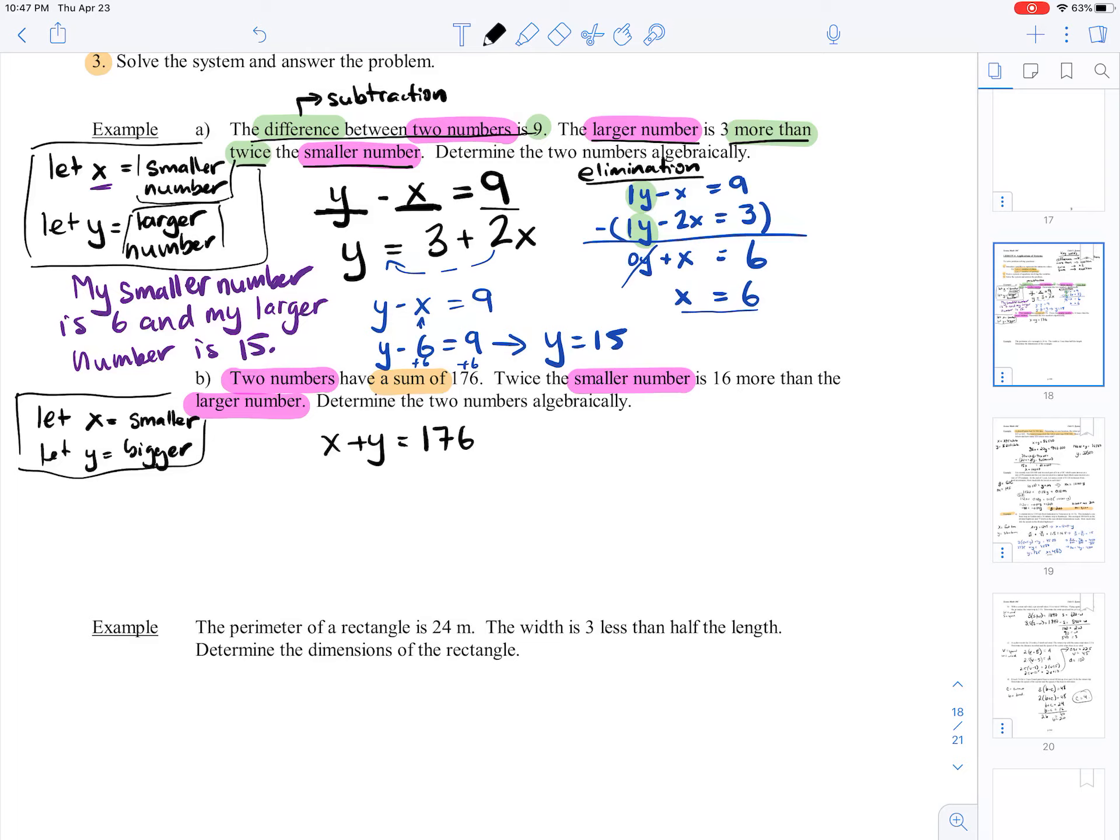Now, twice the smaller number is 16 more than the larger number. So again, we've got twice the smaller number, so I'm going to say two times x is 16 more than the bigger number. Or sorry, two times x is equal to the larger number plus 16.